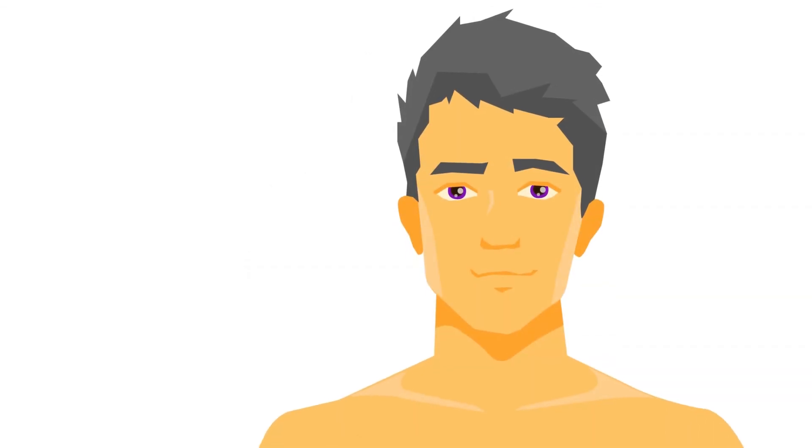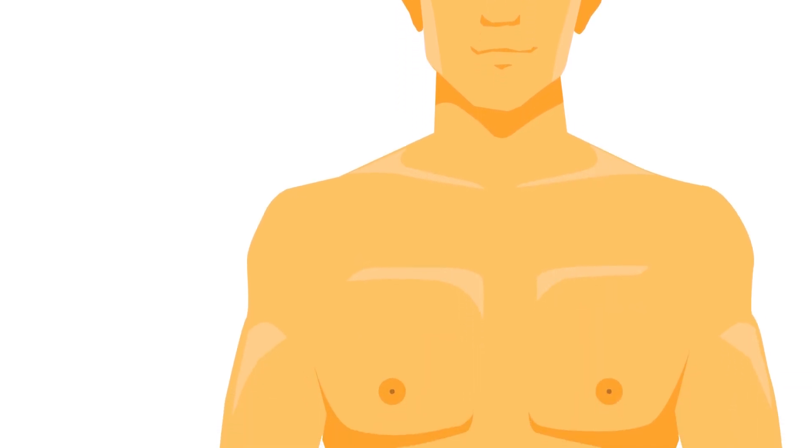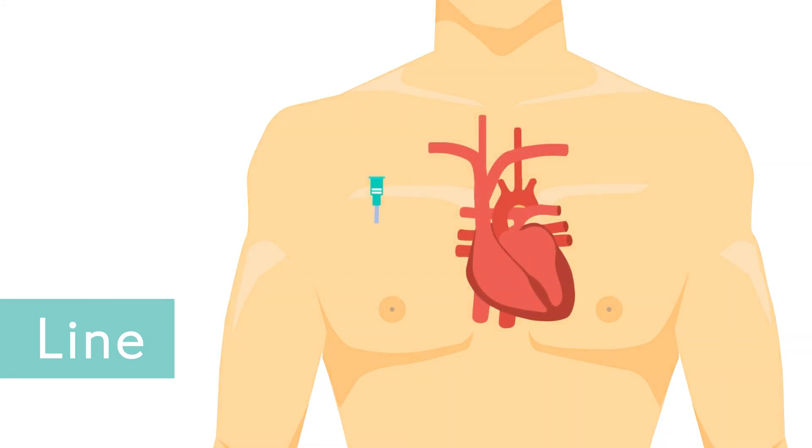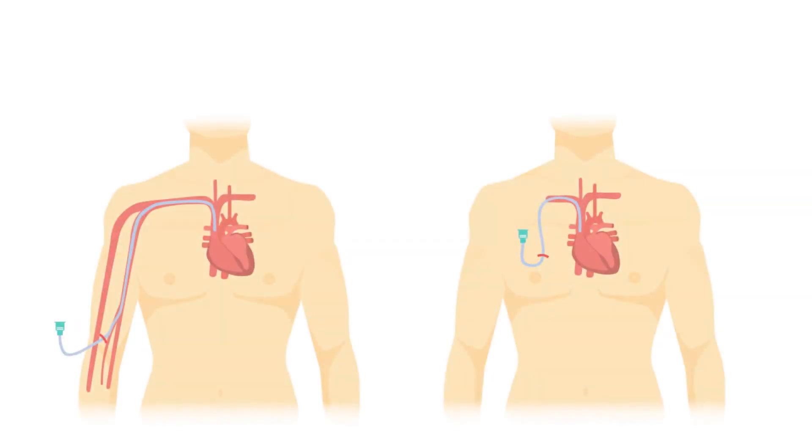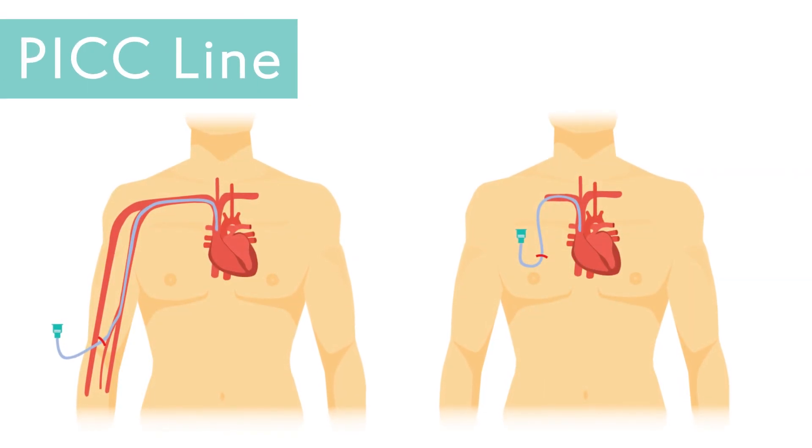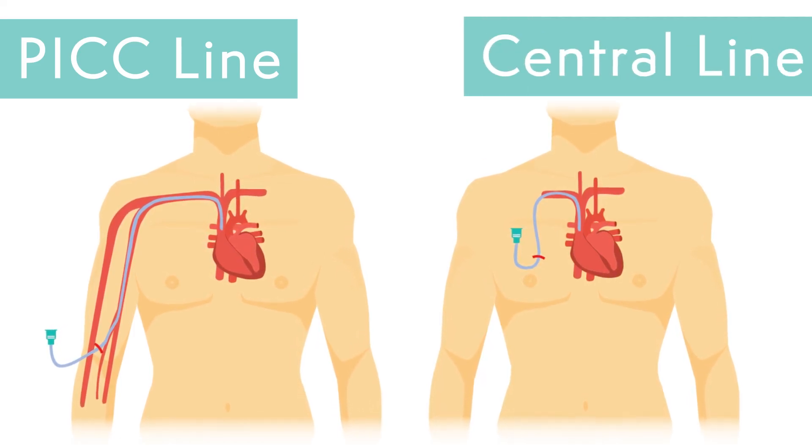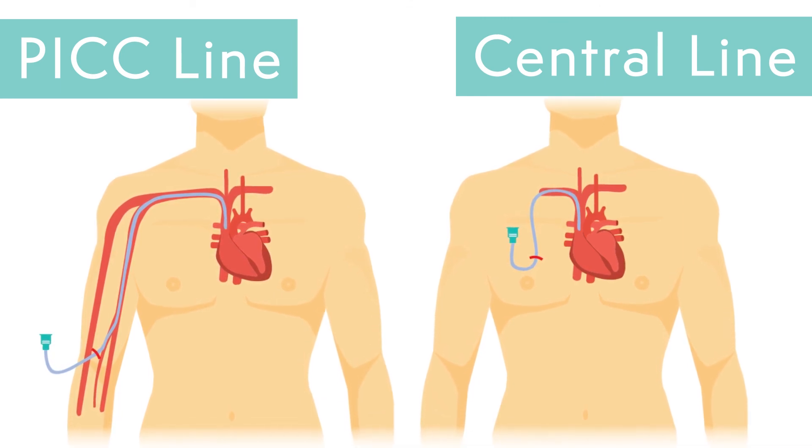Some people have IV chemotherapy through a central venous catheter, often known as a line or central line. This is a tube that goes into a bigger vein and stays in place for a longer time, sometimes several months and sometimes for the whole of your treatment. There are two types of central line, a PICC line, which is inserted through a vein in your arm, or a tunneled central line, which is inserted directly into your chest during a small operation.